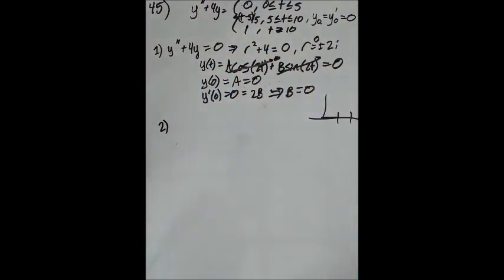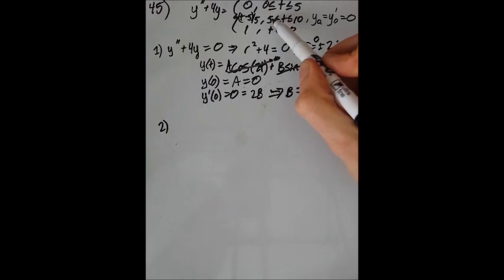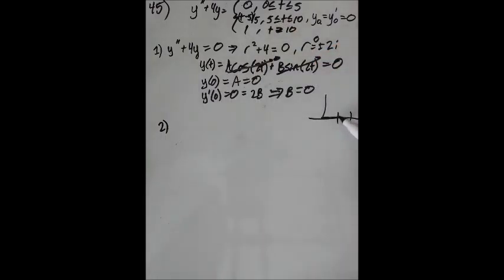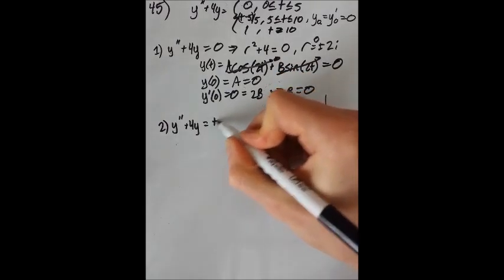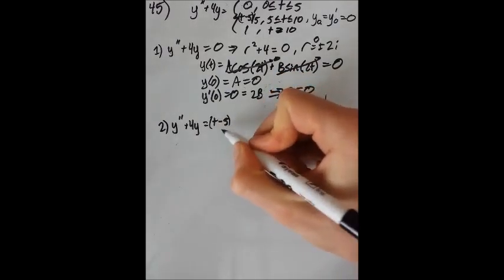Second region. We're going to try to equate at time equals 5, t equals 5, letting the function be 0, whatever it is, to make it continuous. So let's solve the function in this region. We have y double prime plus 4y equals t minus 5 all over 5.